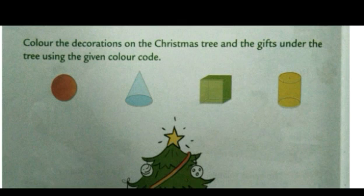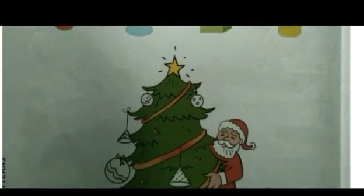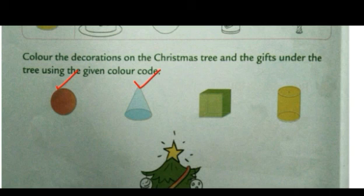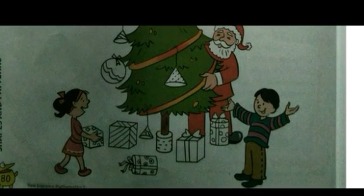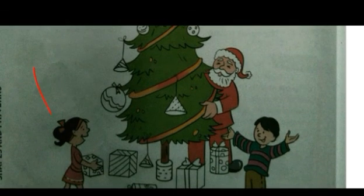Now see the next question: Color the decorations on the Christmas tree and the gifts under the tree using the given color code. You need to color the decorations on the Christmas tree using the given color code — color the sphere with red, the cone with blue, the cube with green, and the cylinder with yellow. The shapes you can see here, you have to color according to the given color code. I would like you all to do this as homework.